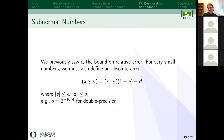Moving back to subnormal numbers. We saw that the standard floating point error model — equation one — is not sound for subnormal numbers; you might under-approximate the error. The way we fix this is we have a small additive term bounded by delta. For double precision, the absolute value of delta is less than 2^{-1074}, which is much smaller than epsilon (2^{-53}). But we are carrying about a large number of flops where this error might accumulate, so we want to keep track of these things.